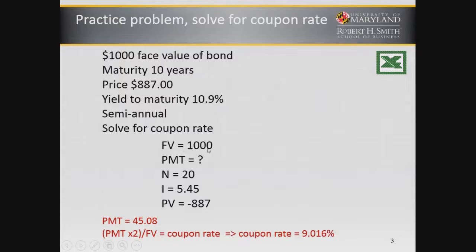Solving for payment: future value is $1,000, and we're solving for payment. N is 20 — 2 times 10. I is 5.45 — 10.9 divided by 2. For present value, we must put in the minus sign because it is a convention we use with bond calculators in Excel: the present value and future value should be of opposite signs, and the present value and the payment would be of opposite signs. We're paying the present value and receiving the coupon payments and the future value.